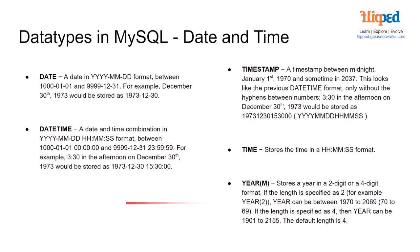Then we have our datetime: a date and time combination in year, month, day, hour, minute, second format — ranging from 1000-01-01 at zero hours, zero minutes, and zero seconds, up to 9999-12-31 just before midnight. For example, 3:30 in the afternoon on December the 30th, 1973 would be stored as 1973-12-30 15:30:00.